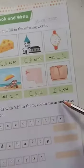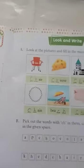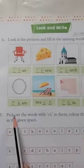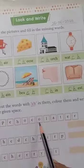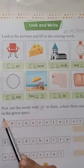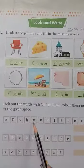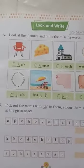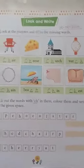C-H-E-S-T, chest. Okay, now next question: pick out the words with 'ch' in them. Color them and write in the given space. It means the words with the 'ch' sound that are found in this box — we have to color them and write them here. Okay, now let's start.